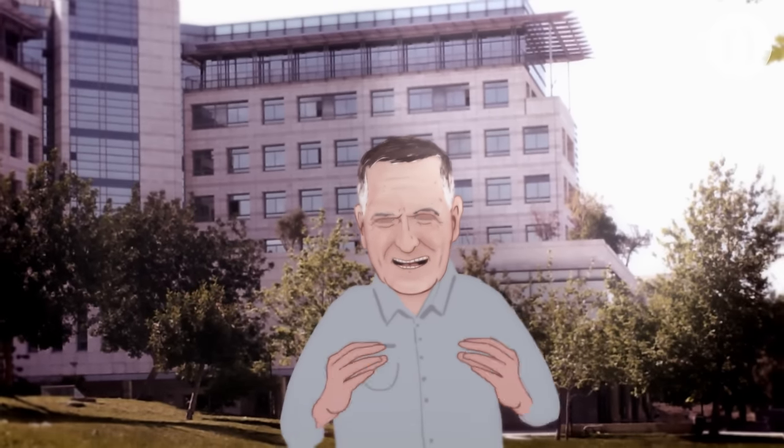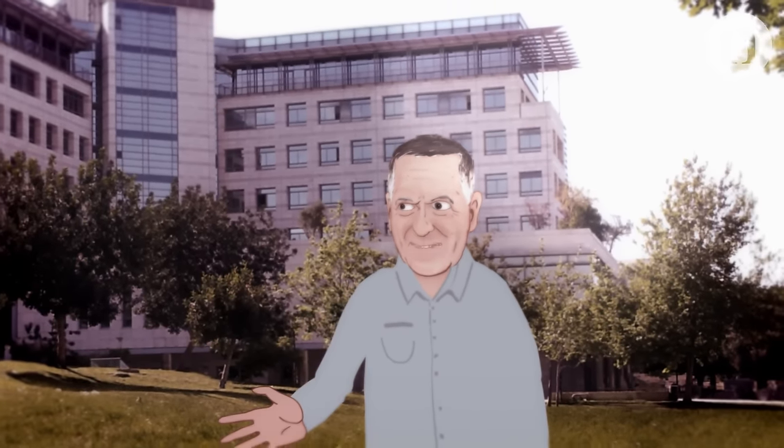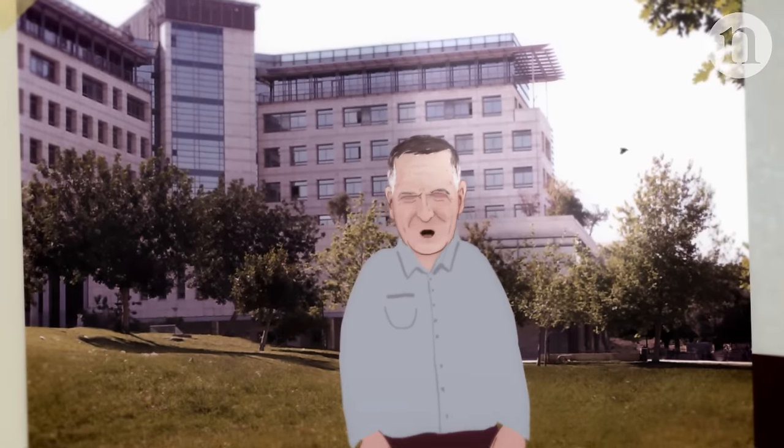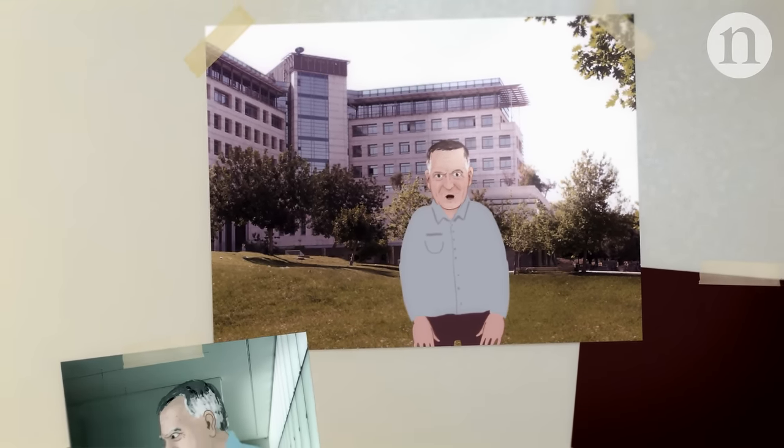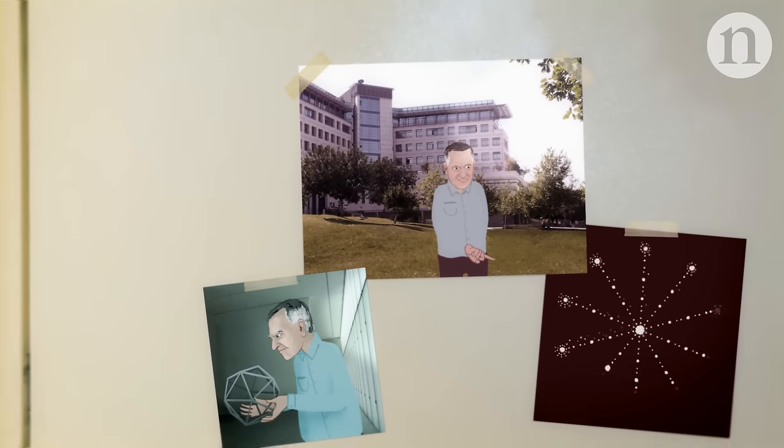My name is Dan Schechtman. I am a distinguished professor at the Technion in Haifa, Israel. I am a laureate of the Nobel Prize in Chemistry 2011 for the discovery of quasi-periodic crystals.